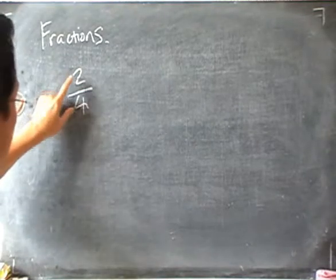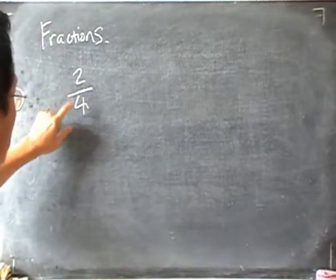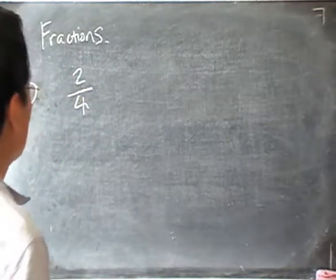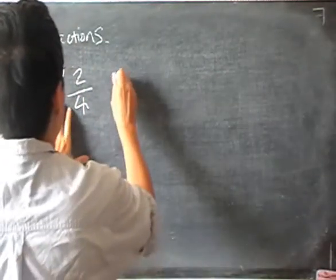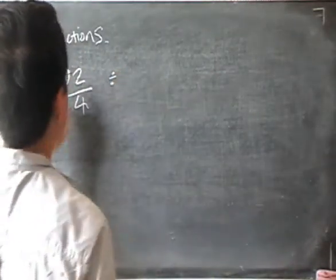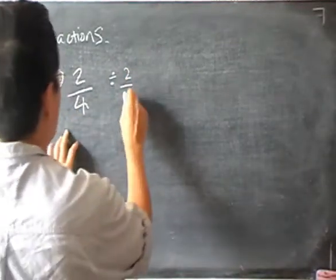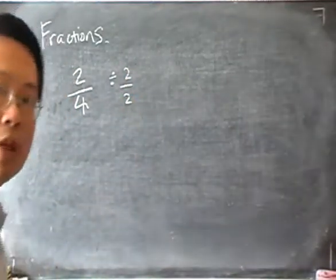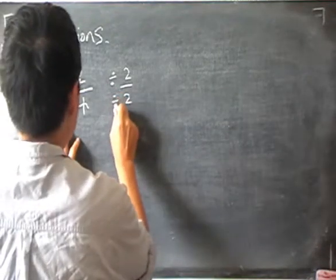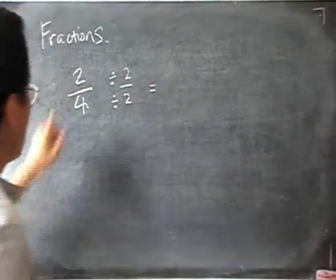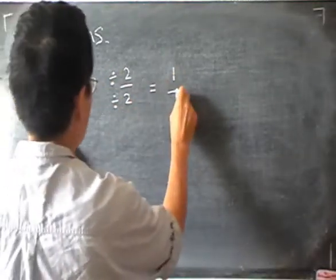then we can actually divide the common factors from the top and the bottom. So in this case, we have 2 and 4, and 2 is a common factor of both. So what we can do to bring it to the lowest term is to divide the top by 2 and the bottom by 2. Then 2 divided by 2 is 1, and 4 divided by 2 is 2.